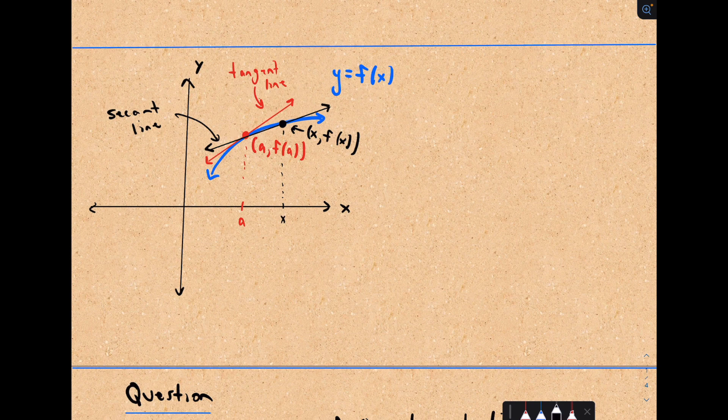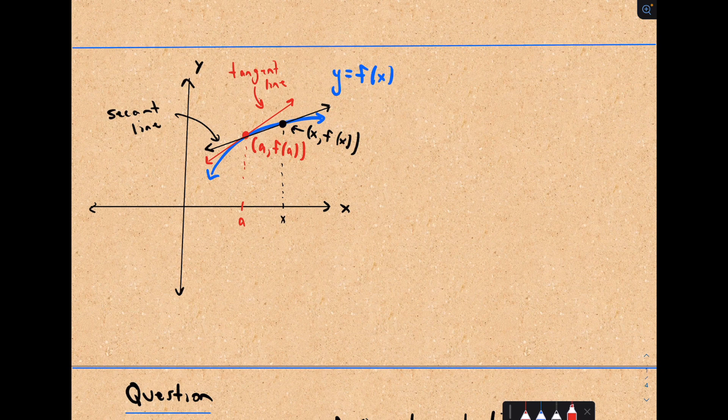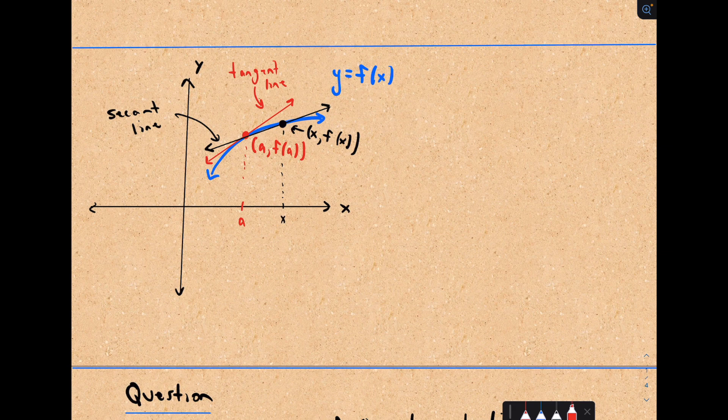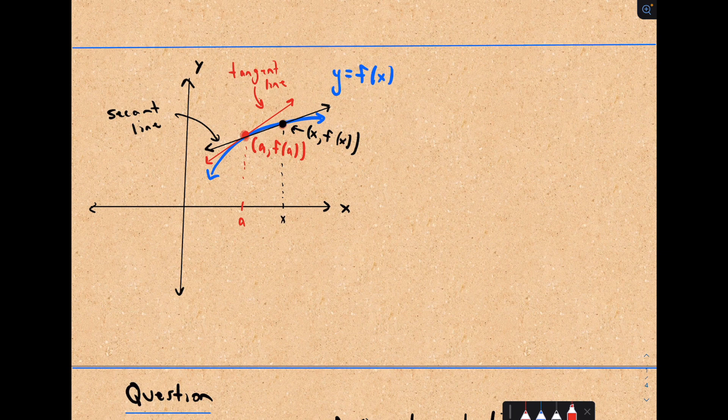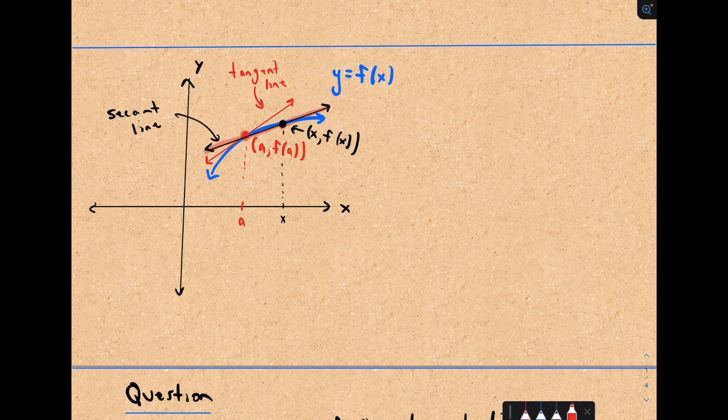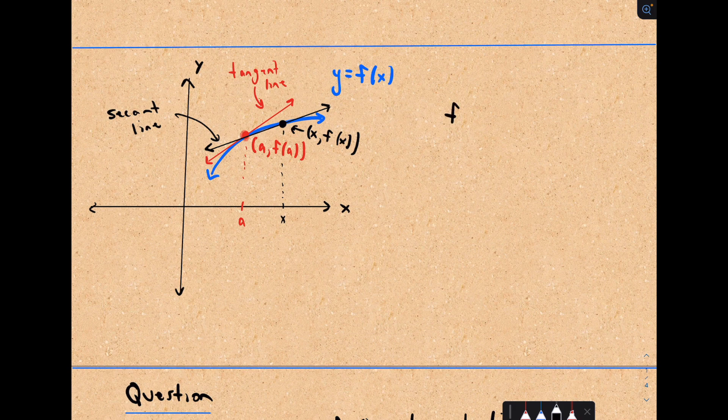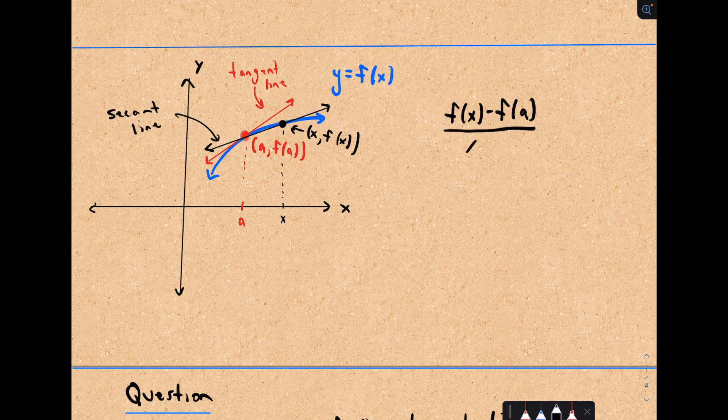To find the slope of the tangent line, what we do is instead we find the slope of a secant line. A secant line is just a line that goes through two specified points on your curve. So I'm still using that point a comma f of a, and I've got some generic point here labeled x comma f of x. I can compute the slope of the secant line. The secant line is just change in y, so that would be f of x minus f of a over x minus a.